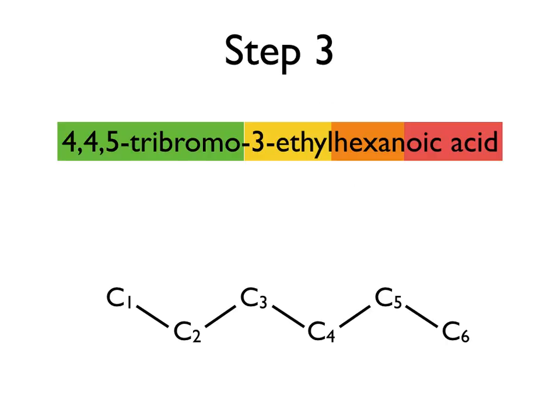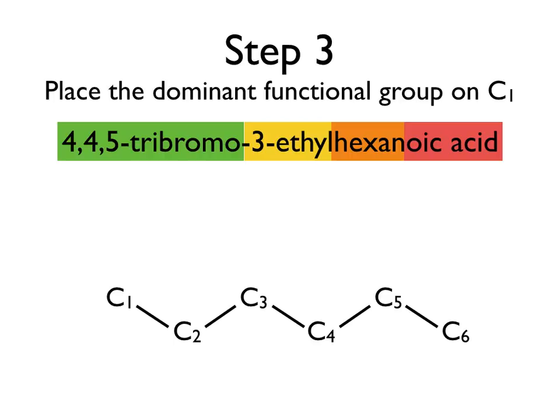After that, we want to determine what the dominant functional group in this molecule is. We have -oic acid on the end, which is short for carboxylic acid, and that's going to be the dominant group here. Since it's the dominant group, we're going to put it on our C1 carbon, which could be on either end, but we've already listed it as the one on the left. The carboxylic acid group is carbon double-bonded to an O and then single-bonded to an OH group.